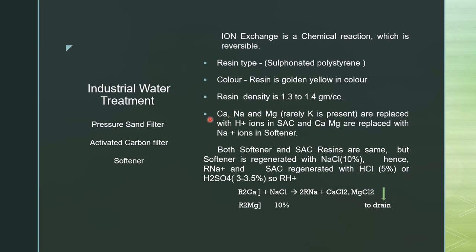Raw water contains cations such as calcium, sodium, and magnesium (potassium is rarely present). These occur as calcium chloride, calcium sulfate, calcium bicarbonate, sodium chloride, sodium bicarbonate, magnesium sulfate, and magnesium bicarbonate. In a strong acid cation unit these are replaced with H⁺ ions, while in a softener, calcium and magnesium cations are replaced with sodium ions. The resin form is either R-H⁺ or R-Na⁺.